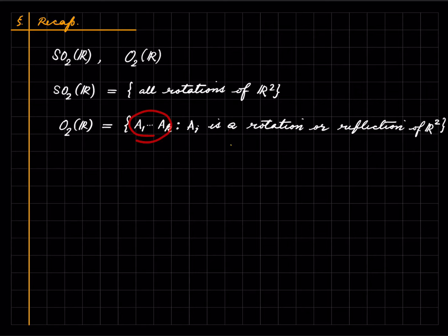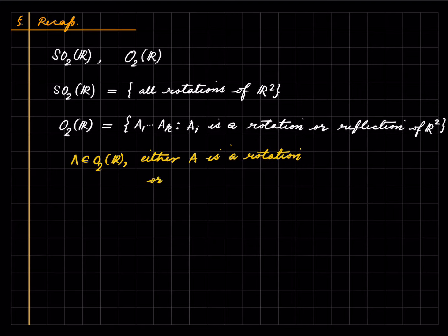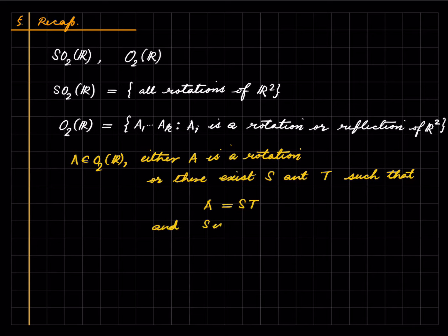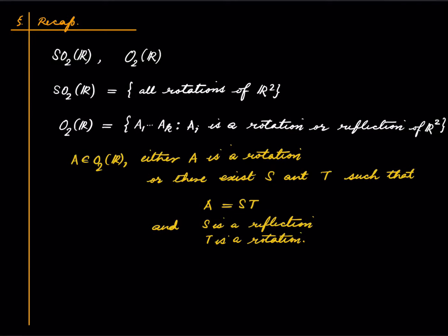We saw that this complicated description can be simplified: if A is a member of the orthogonal group, then either A is a rotation, or there exist S and T such that A is S composed with T, where S is a reflection and T is a rotation.